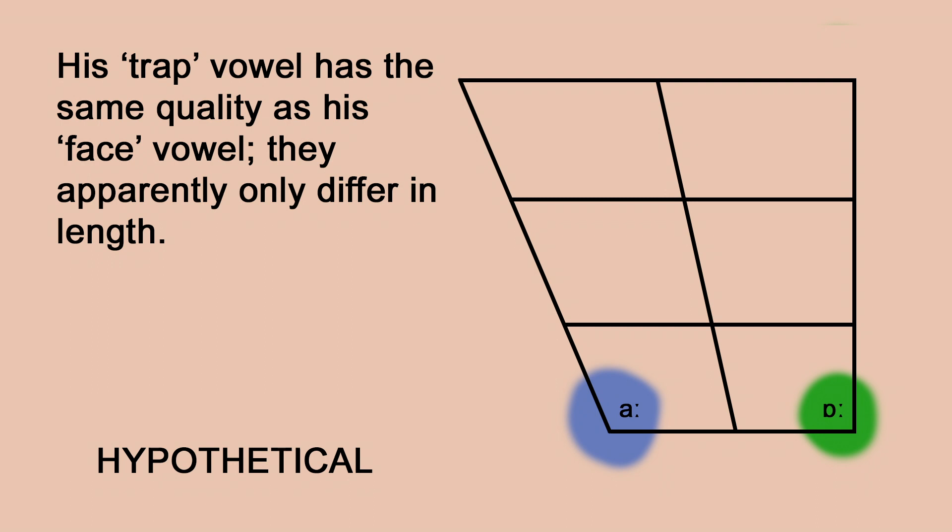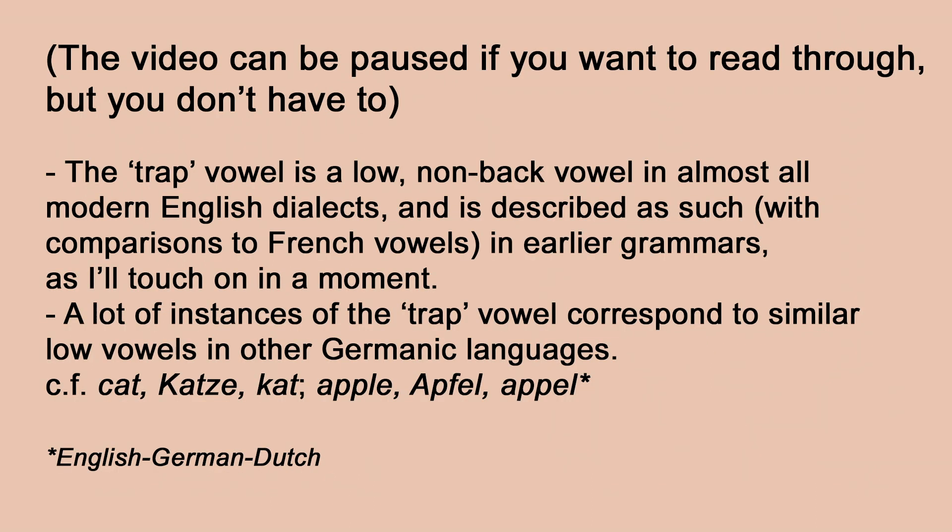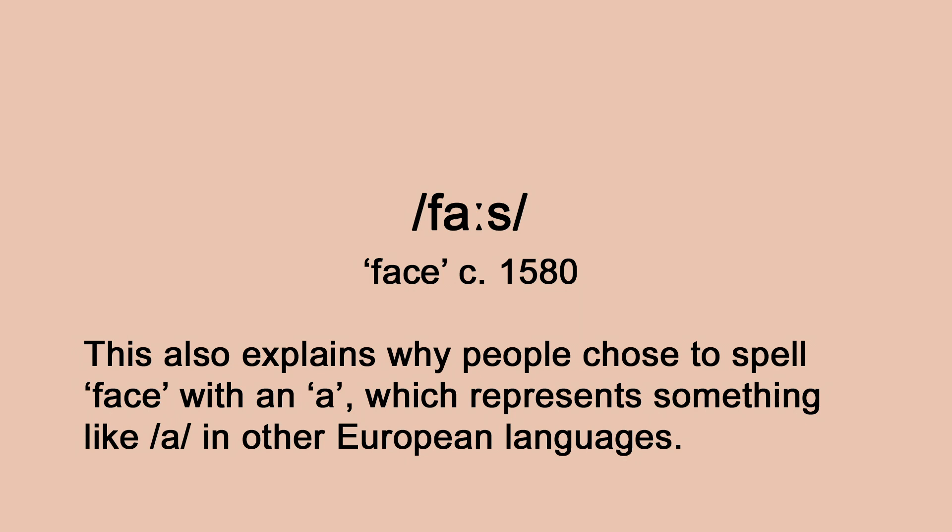Hart puts the vowel in words like 'trap' and 'cat' in a long-short pair with the vowel in words like 'face' and 'mate'. We're fairly confident the short trap vowel has stayed pretty stable throughout the history of English — it's always a fairly low vowel and usually not a back vowel. If face was in a long-short pair with trap, this means it had the trap vowel just held longer — something like 'fast'. Robert Robinson, writing about 50 years later and also creating a phonetic alphabet, likewise pairs the trap vowel with the face vowel.